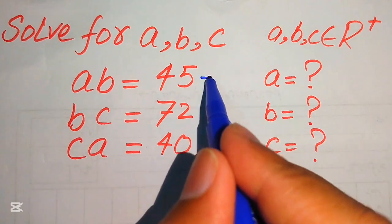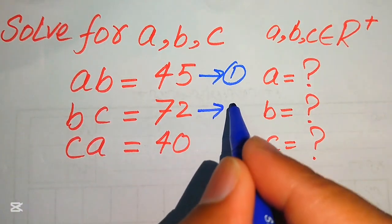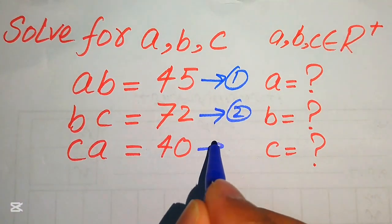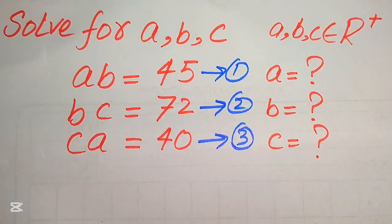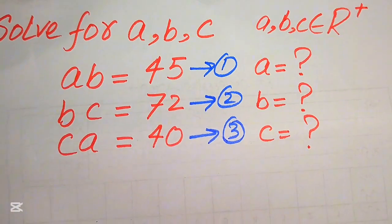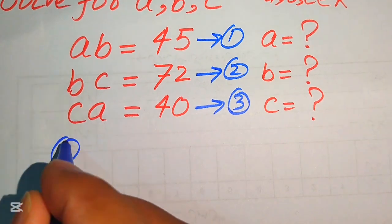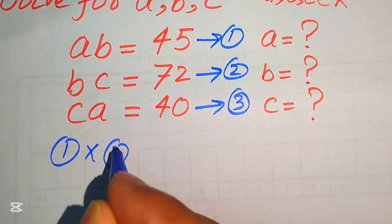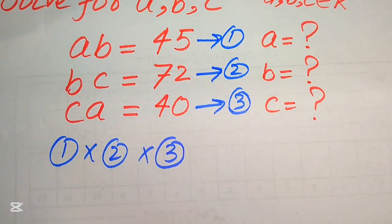First, we call this equation number 1, this equation number 2, and this is equation number 3. In the first step, we need to multiply equation number 1 with equation number 2 with equation number 3 — it means we multiply all three equations together.